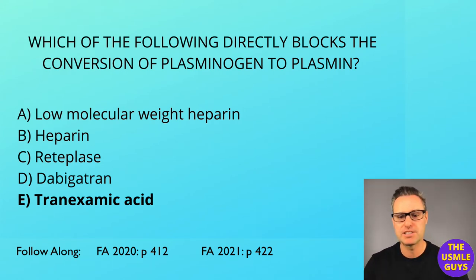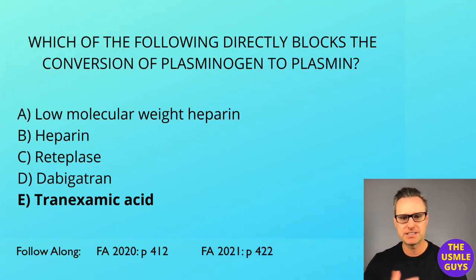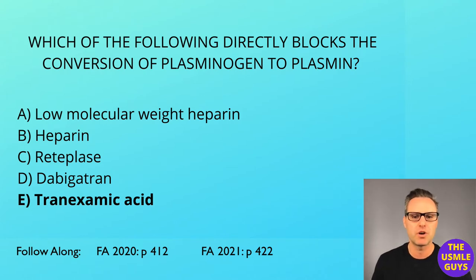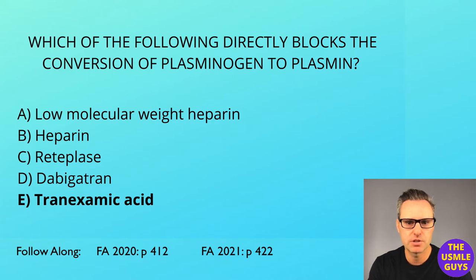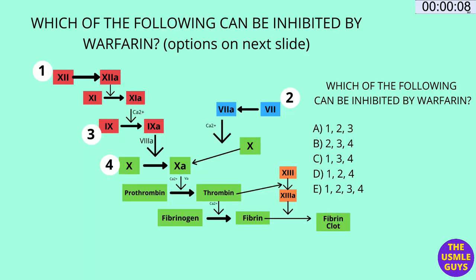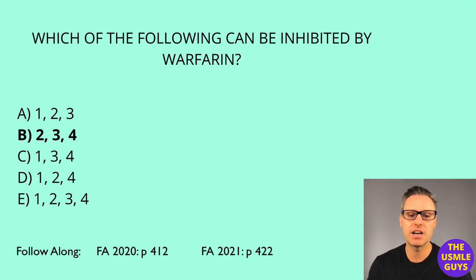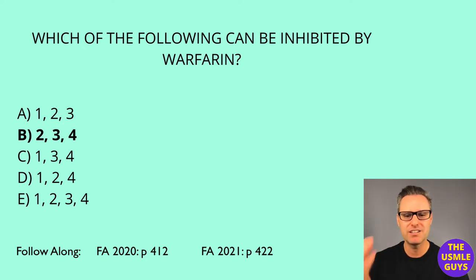Having a more simplified version of this really makes it easier on exam day. I recommend using the image I gave you that eliminates unnecessary material, then throw in things like cofactors and where drugs work — it's better to build it yourself for a better understanding. The answer to the next question is B, 2, 3, 4. You should already know that warfarin can inhibit factors 2, 7, 9, 10, and protein C and S. We'll get into that shortly.